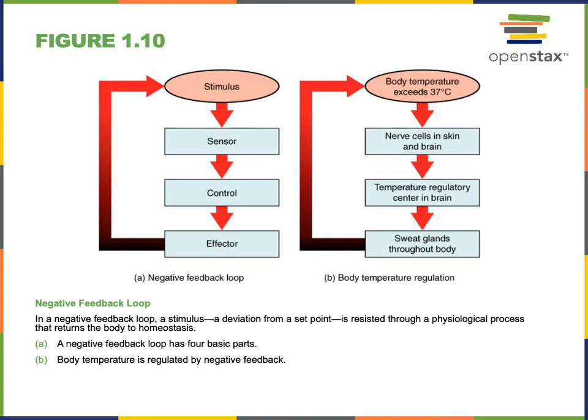Homeostasis is a steady state of body systems that living organisms maintain. There is a set point for homeostatic variables, which are the factors being regulated by homeostatic control mechanisms. An example could be body temperature — 37 degrees Celsius is the set point for human body temperature, which is about 99 degrees Fahrenheit.